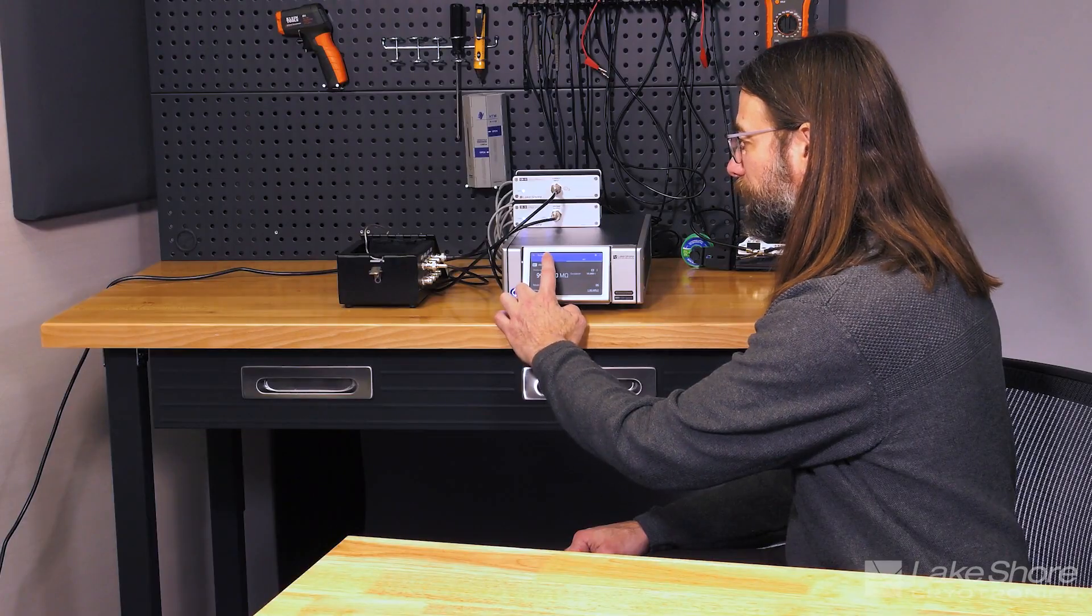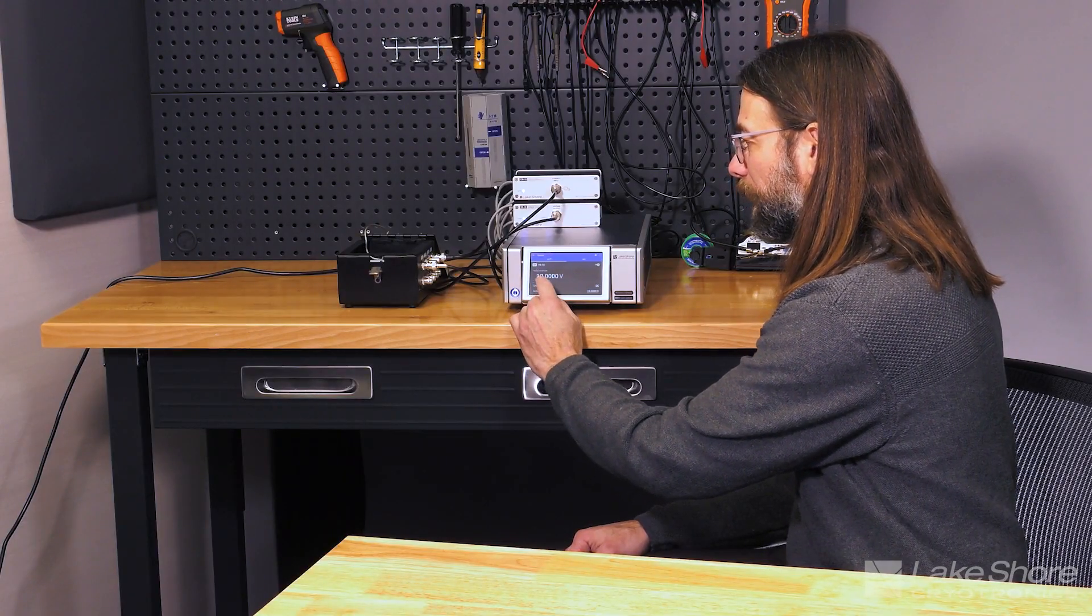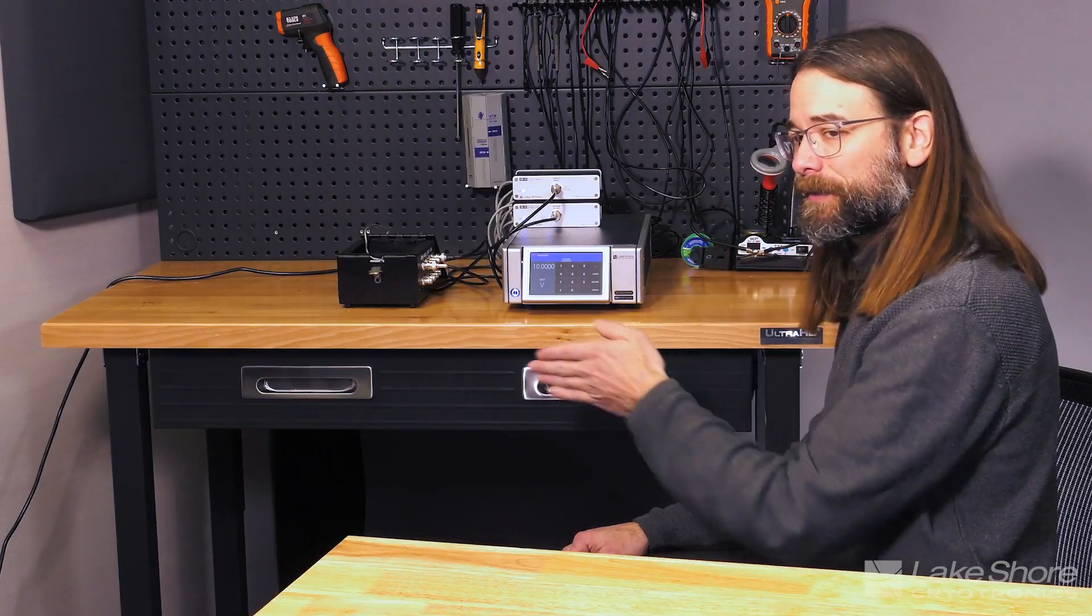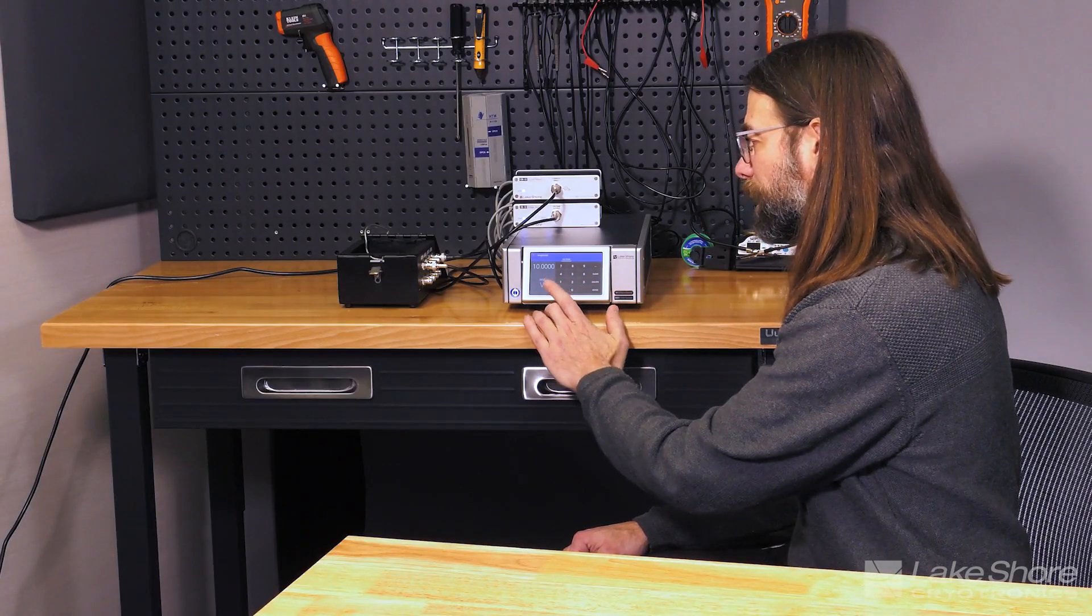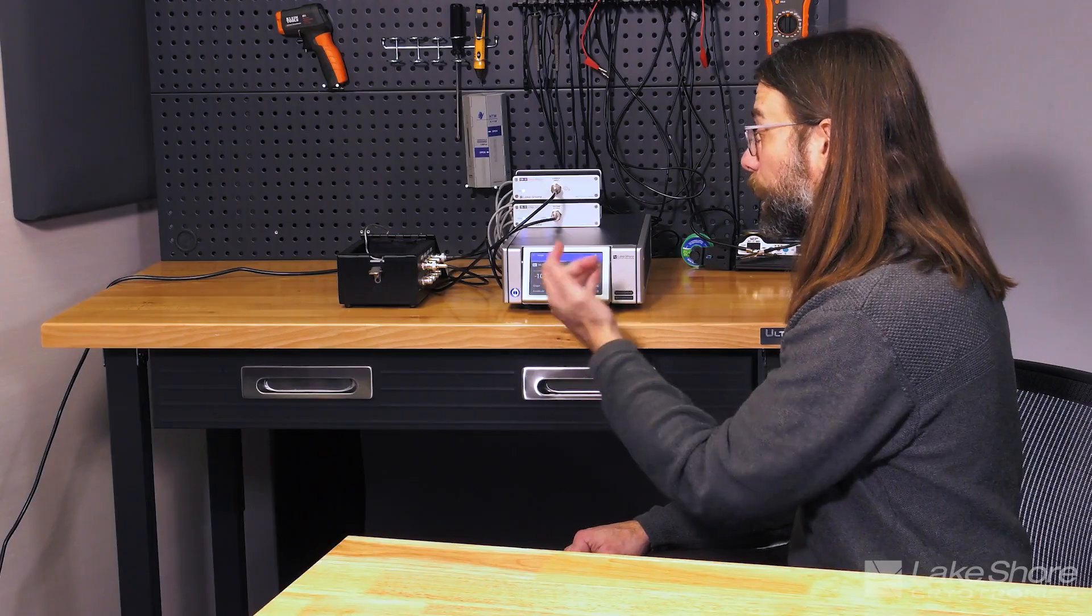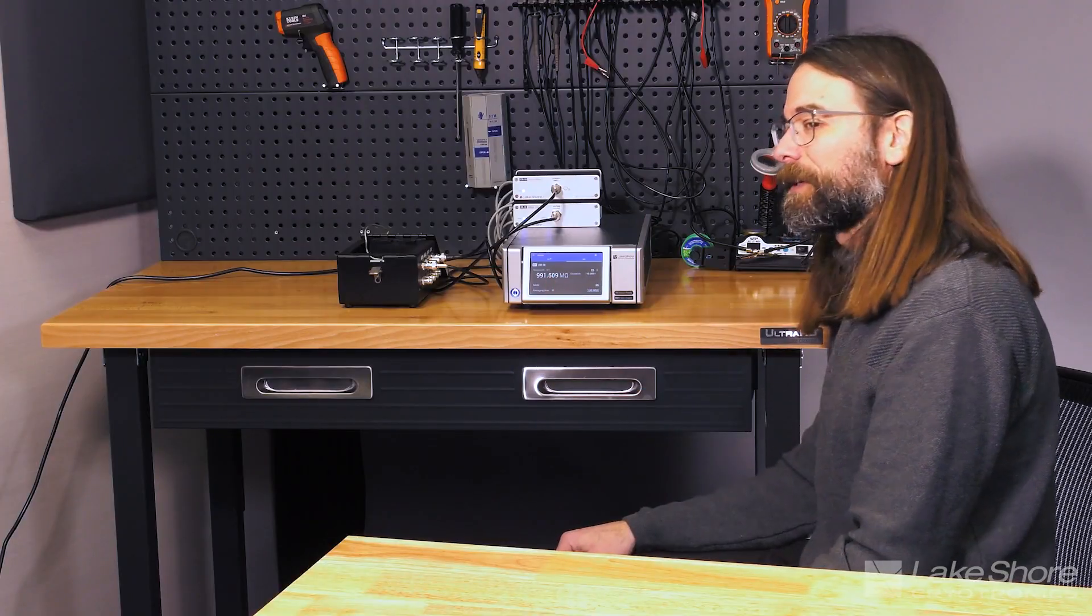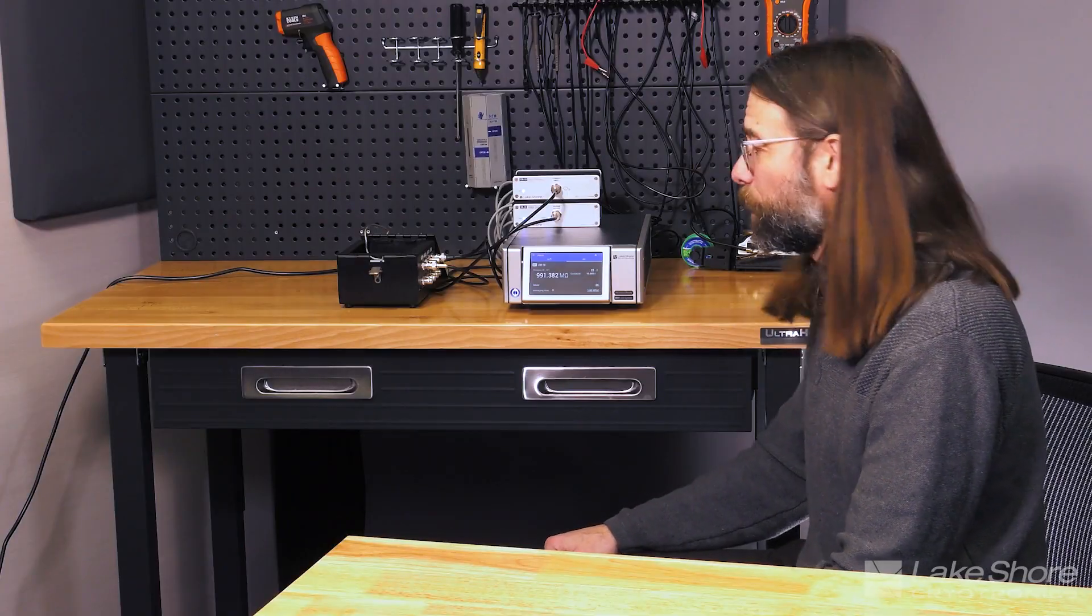But now what I'd like to show you is again 994. If we switch back over and we change the polarity so now instead of sourcing a positive 10 volts we're just going to switch that to a negative 10 volts. Now we would expect that our resistance would be the same value but you see it actually has dropped down to 991 megaohms.